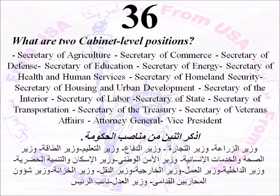Number Thirty-Six: What are two cabinet-level positions? There are many different cabinet-level positions. Here is the list: Secretary of Agriculture, Secretary of Commerce, Secretary of Defense, Secretary of Education, Secretary of Energy, Secretary of Health and Human Services, Secretary of Homeland Security, Secretary of Housing and Urban Development, Secretary of the Interior, Secretary of Labor, Secretary of State, Secretary of Transportation, Secretary of the Treasury, Secretary of Veterans Affairs, Attorney General, and Vice President. You only need to name two cabinet-level positions.